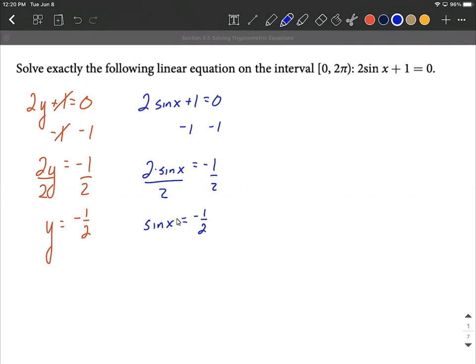After isolating sin(x), we think what angle would produce -1/2? First I think which would produce positive 1/2, because positive 1/2 comes up a lot. Hopefully we're thinking π/6 gives us positive 1/2.